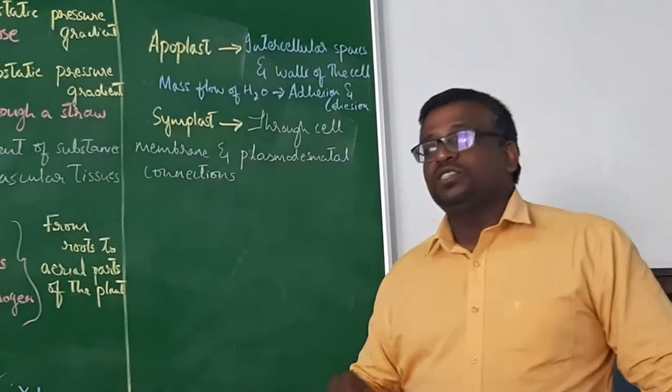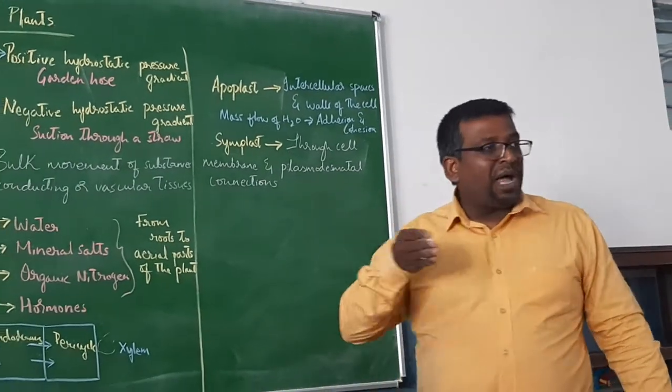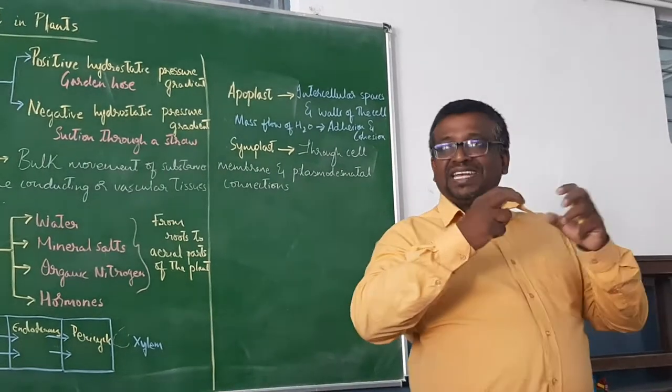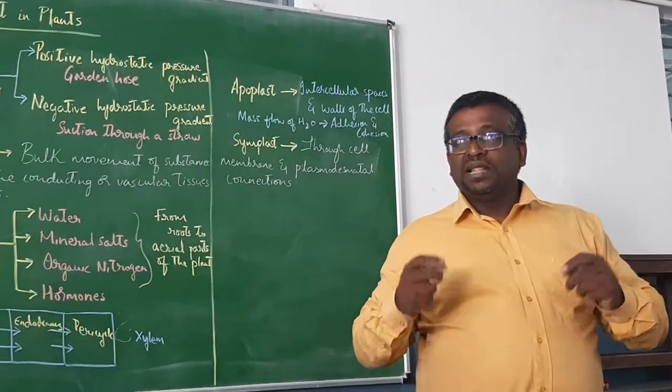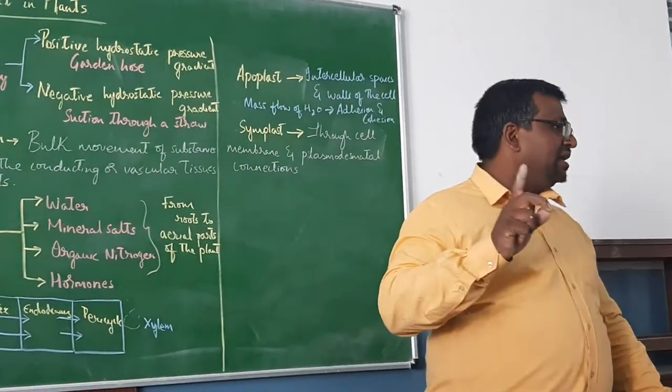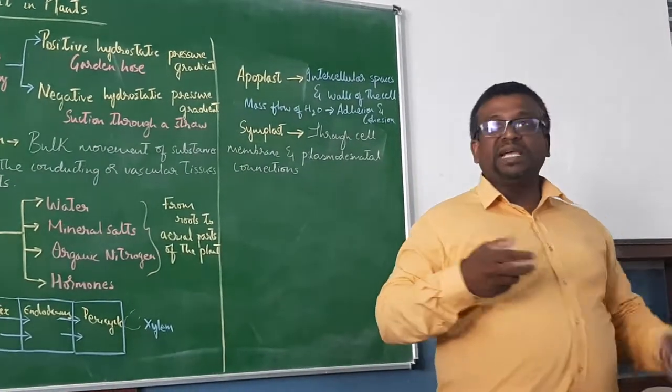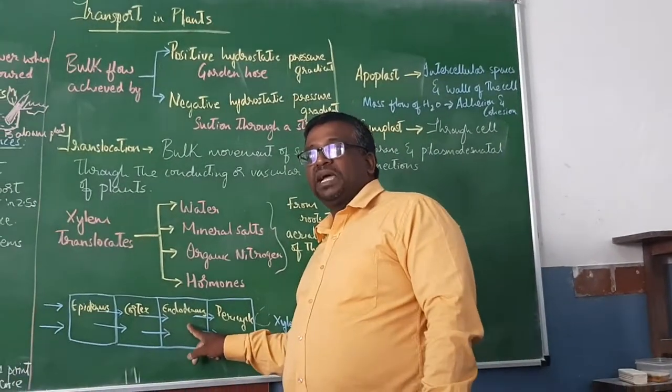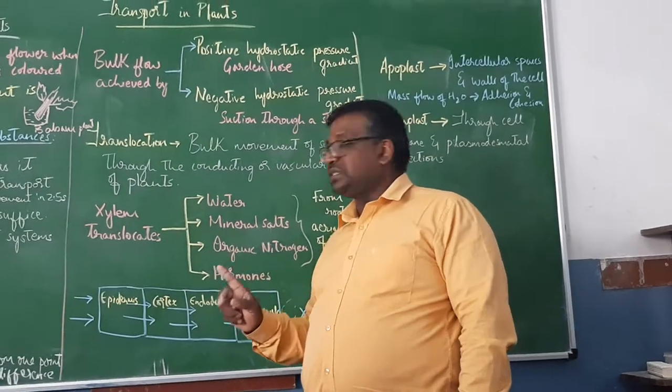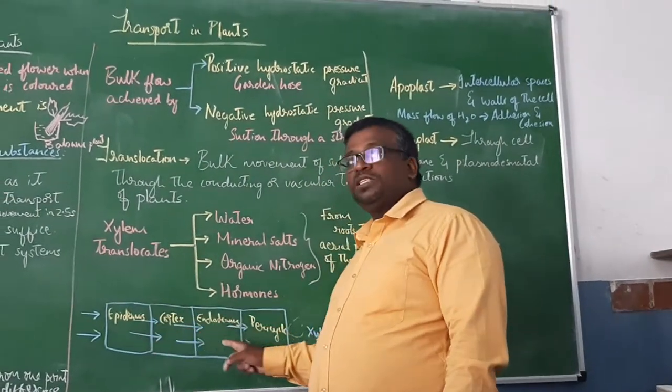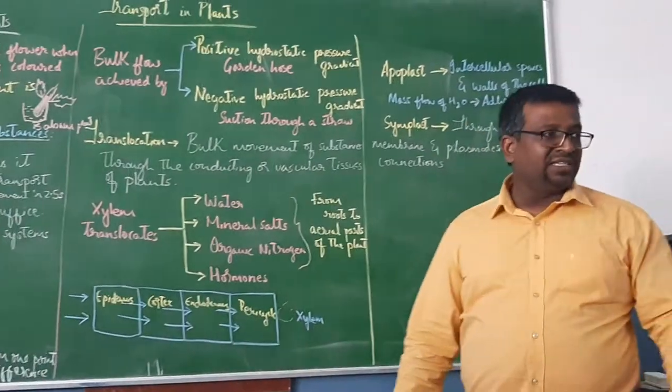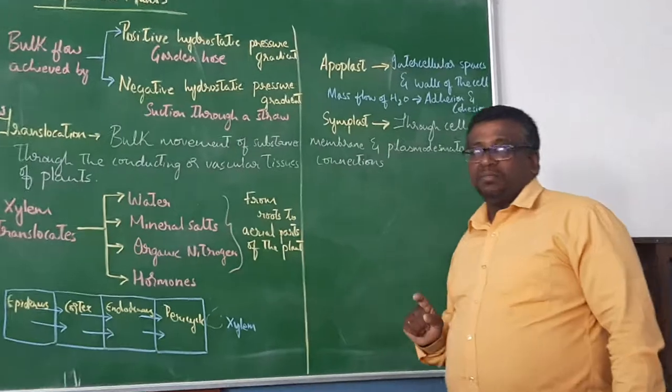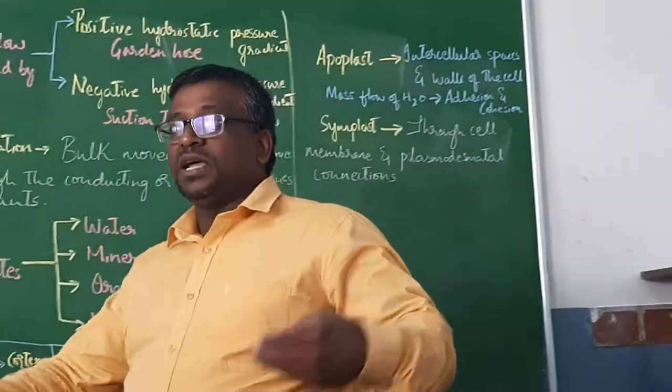Symplastic pathway is through the cell membrane and it is going to pass through the protoplasm. The protoplasm of two cells are connected, interconnected - what do you call it as? That protoplasmic connection as plasmodesmatal connections. The protoplasmic connection between two cells, the connecting between two cells through plasmodesmatal connections. They enter through the plasmodesmatal connections and cell membrane, water enters. What do you call that pathway as? Symplast pathway. That is how water enters up to the xylem.